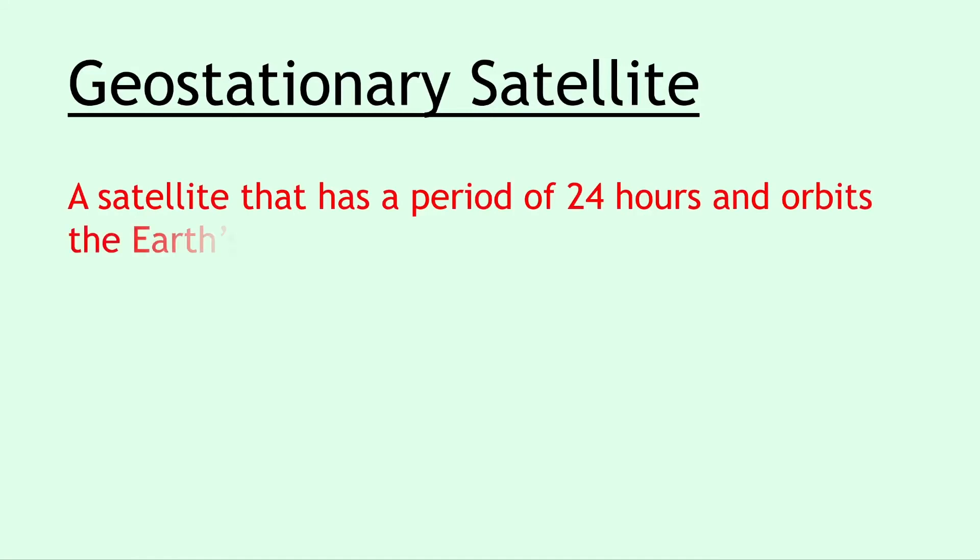Next, we have geostationary satellite, and this is a satellite that has a period of 24 hours and orbits the Earth's equator at an altitude of 36,000 kilometers. So it's useful to remember these two facts about geostationary satellites, the fact that they have a period of 24 hours and an altitude of 36,000 kilometers.